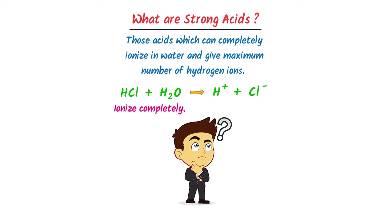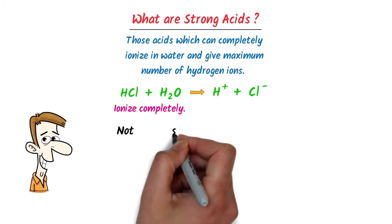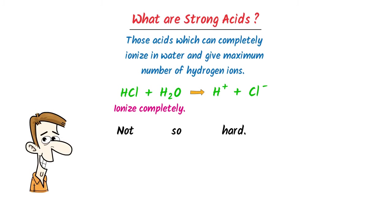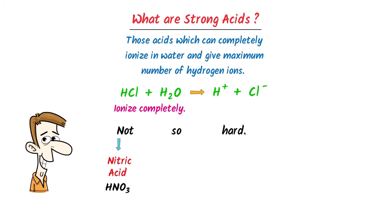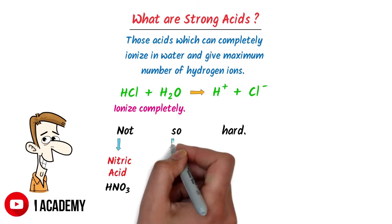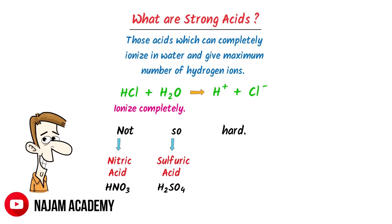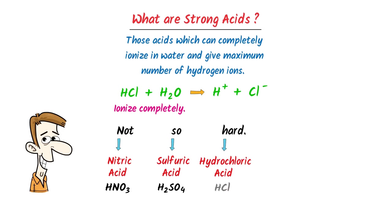How can we remember important strong acids? I always say 'not so hard.' N stands for nitric acid (HNO3), S stands for sulfuric acid (H2SO4), H stands for hydrochloric acid (HCl).